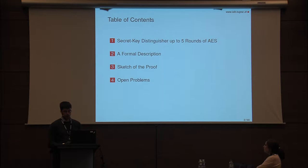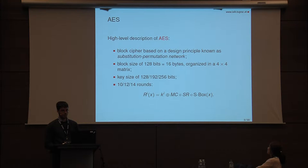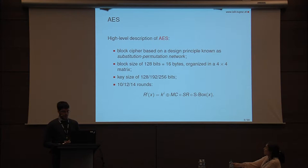AES is a block cipher based on a design principle known as Substitution Permutation Network. It works on a block size of 16 bytes organized in a four-by-four matrix, and it uses key sizes of 16, 24, or 32 bytes. Depending on the key size, the number of rounds is 10, 12, or 14. Each round is composed of four operations: an S-Box, a ShiftRows, a MixColumns, and an AddRoundKey operation.